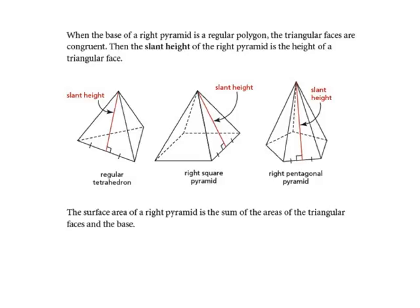When the base of a right pyramid is a regular polygon, the triangular faces are congruent — that means all the faces are the same. A regular polygon has equal sides. For example, an equilateral triangle is a regular polygon, and so is a square, because they have sides that are equivalent in length, and usually the same angles as well.